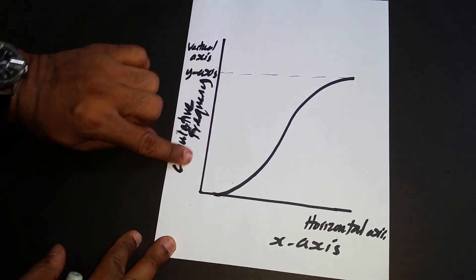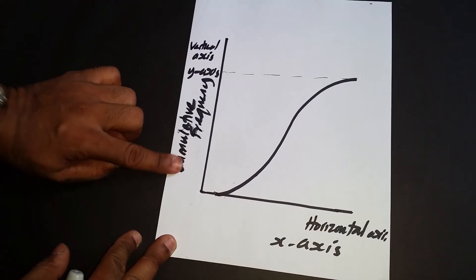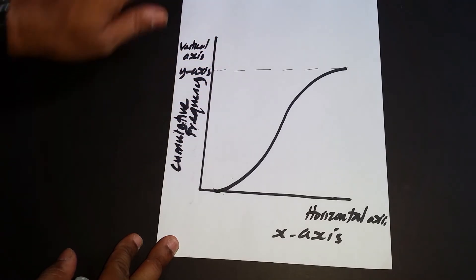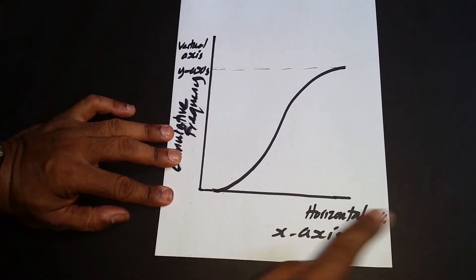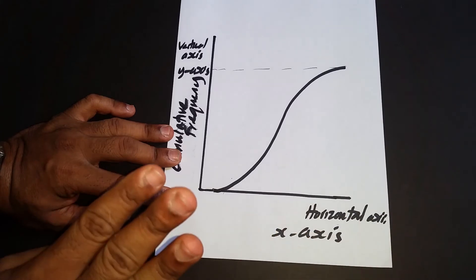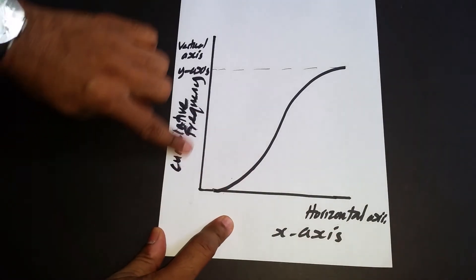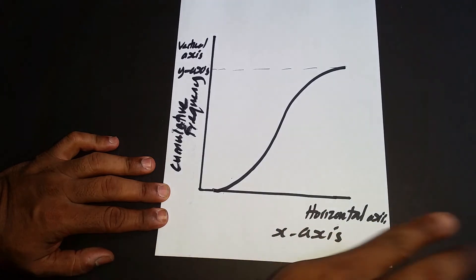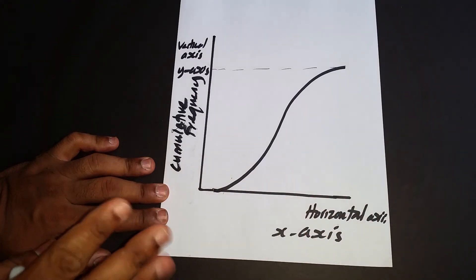The vertical axis will always represent things like number of packages, number of students, or number of plants. The horizontal axis will represent things like weight in kilograms, time in seconds, or height in centimeters. So the y-axis is for count data and the x-axis is for measurement data — that's what you're going to be plotting.